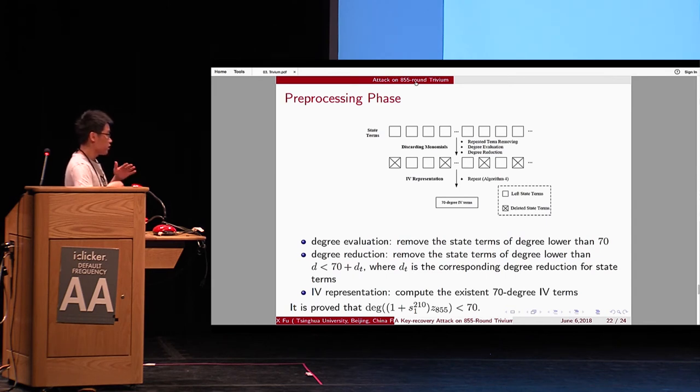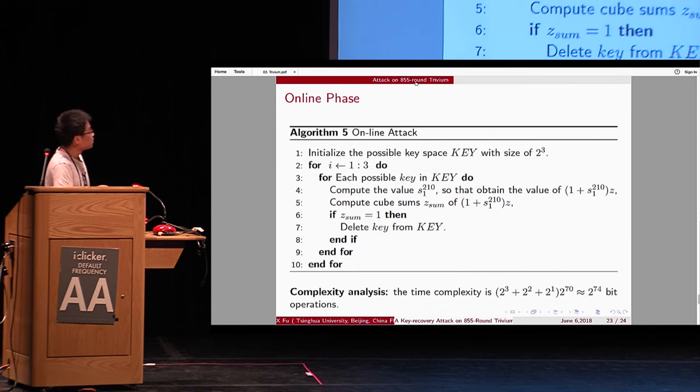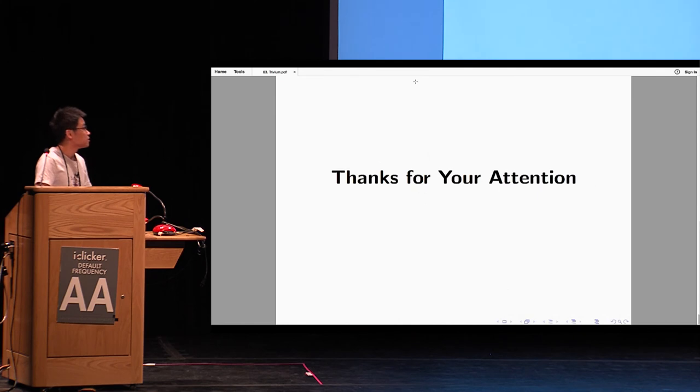And we decompose many rounds, and there are no state terms left. And all the state terms whose degree is lower than 17. So, we conclude that this polynomial have a degree which is less than 17. In online phase, we have to guess 3 bit k, and compute the cube sums of this polynomial. And the complexity is 2 to 74 bit operation. Thank you.